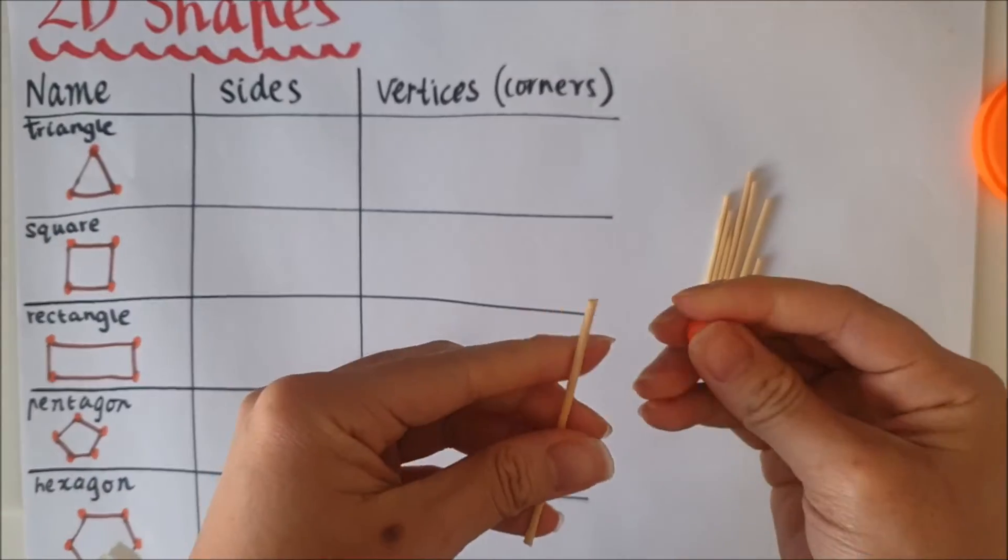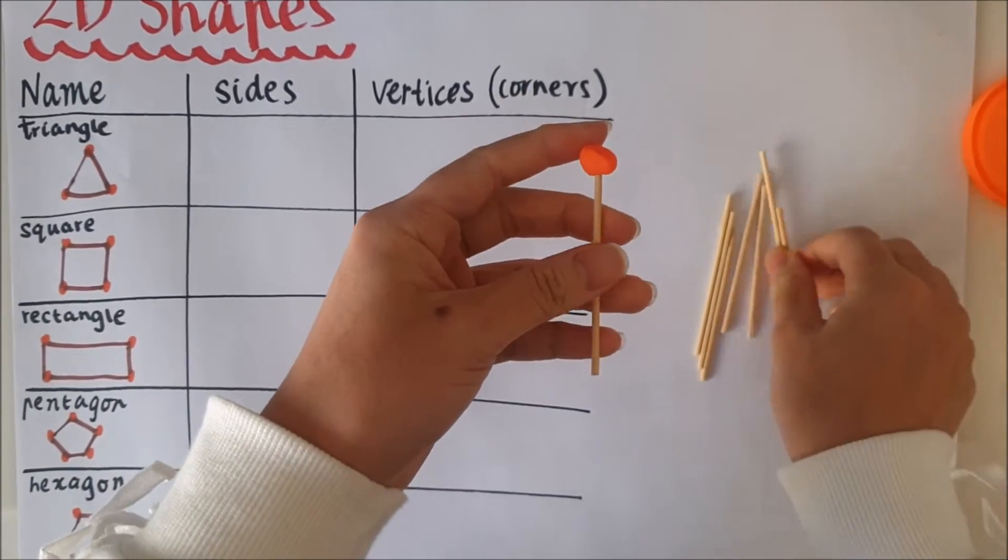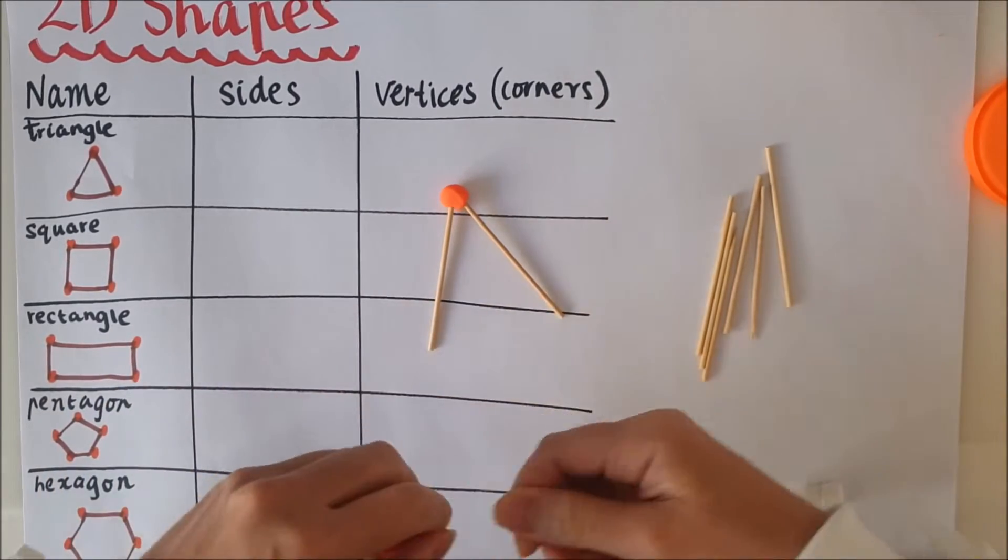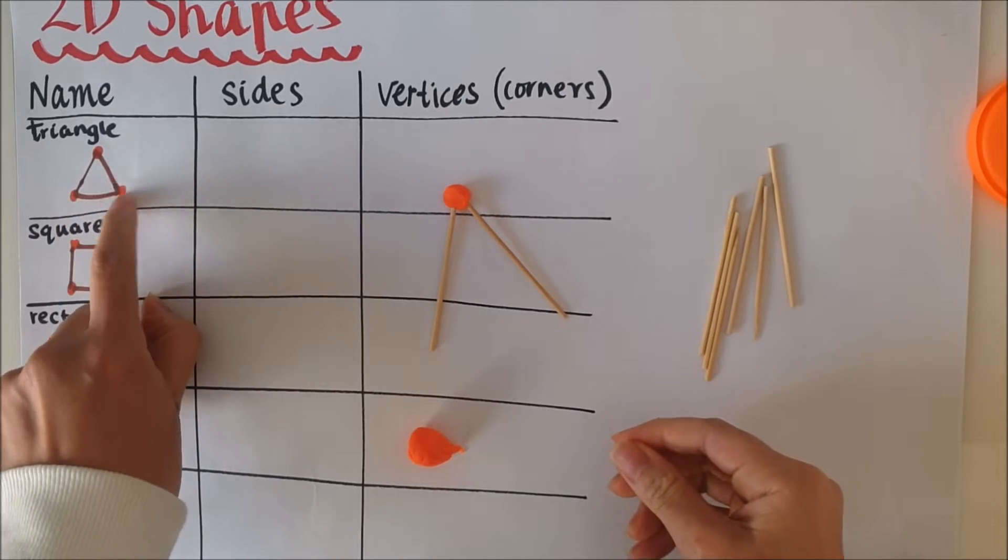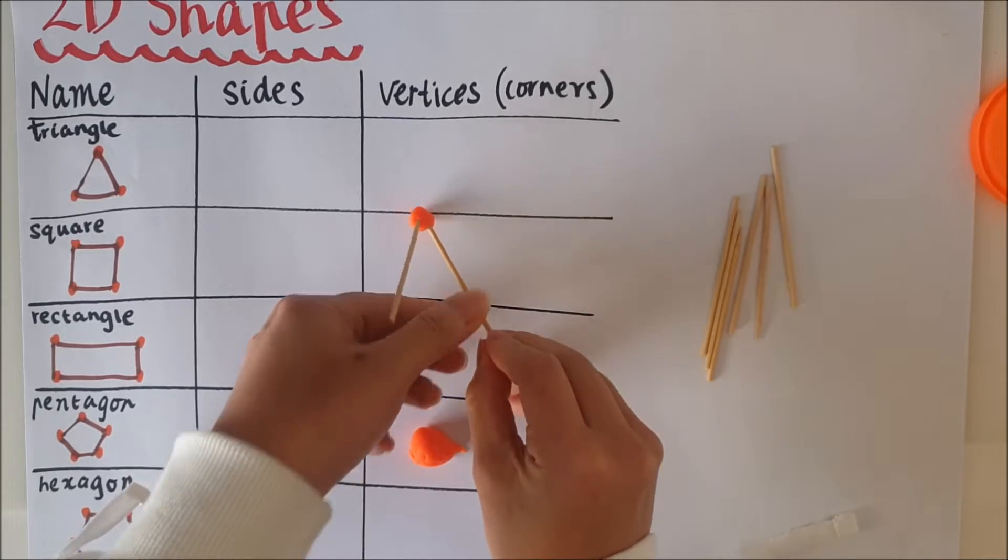So first I'm going to go ahead and make a triangle. So here I've got some play-doh. Now if you don't have play-doh or blue tack or something sticky you can always just draw the shape like that and put a little circle to identify the corners.